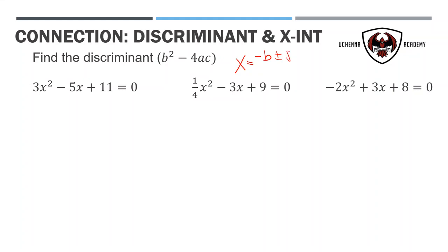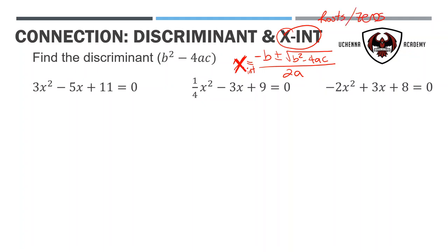The quadratic formula is negative b plus or minus square root of b squared minus 4ac, all divided by 2a. The quadratic formula allows us to find x-intercepts — the x here is really the x-intercept. Another word for x-intercept is roots, zeros, and oftentimes they're called solutions as well. So when something asks you for a solution, it's really asking you to find the x-intercept.